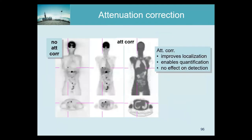Here are typical results. This is the image you get without attenuation correction. This is the reconstructed attenuation image, reconstructed with an iterative algorithm. And this is the attenuation-corrected activity image. For the attenuation image, you can see it cannot compete against CT — the resolution is poor and the contrast is very poor.